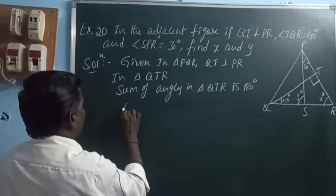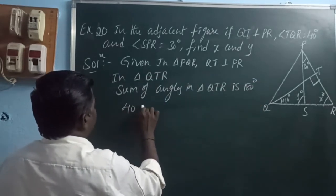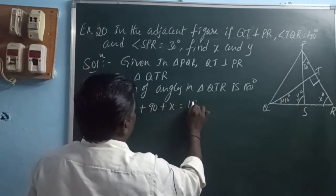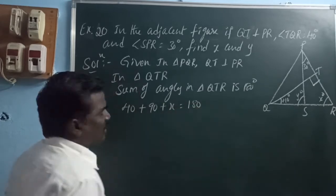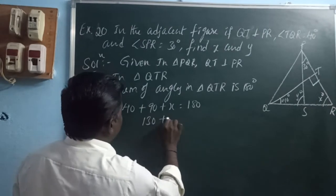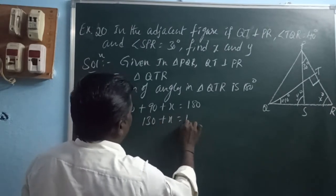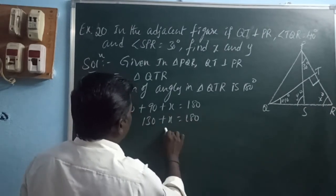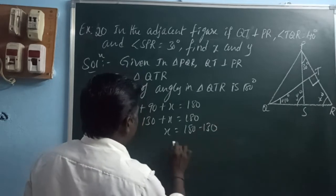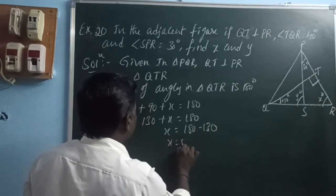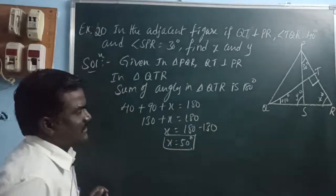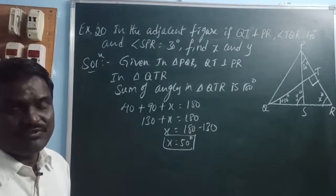In triangle QTR: 40 plus 90 plus X equals 180. So 130 plus X equals 180, giving X equals 180 minus 130. Therefore X equals 50 degrees.